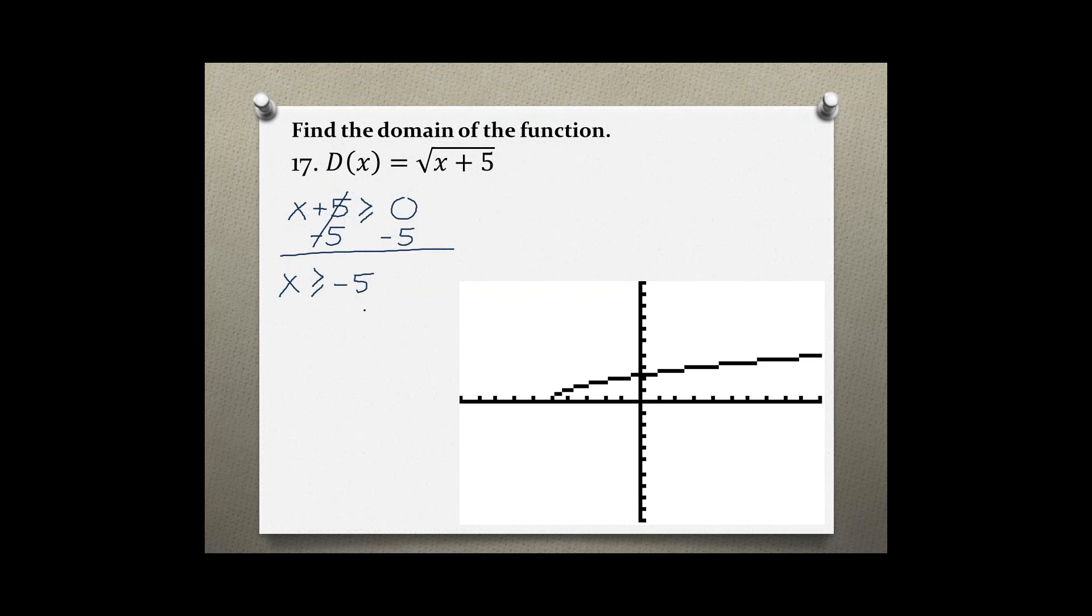As I said, negative 5 is the value on the graph where the radical function starts. The domain begins at negative 5 and continues to positive infinity.